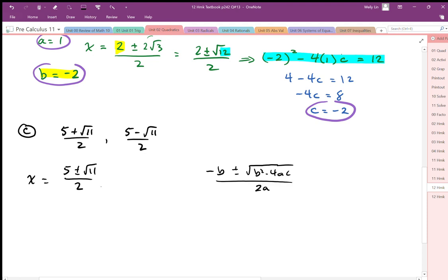Since the denominator is 2 here, we can just say that the a value, we're just going to let the a value equal to 1 to start. And then we can solve for the other parts based on the a value equal to 1.